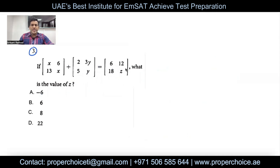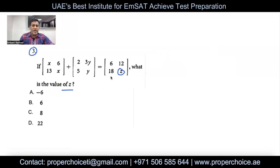Question three: if one matrix added to another matrix gives the result 6, 12, 8, 9, z — what is the value of z? The z here is a variable, not a number. This one can't be done on a calculator because the matrices contain variables like x and y. To find z, I note that z equals the last element of the first matrix added to the last element of the second matrix — so z equals x plus y.